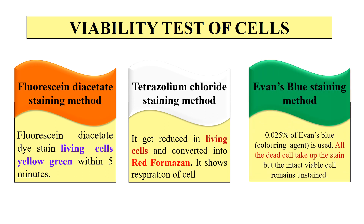Next is Evan's blue. This Evan's blue dye stains the dead cells — it enters inside the dead cells and stains them blue in color. We generally use 0.025% of Evan's blue. All the dead cells take up this stain, while the living or viable cells remain unstained.